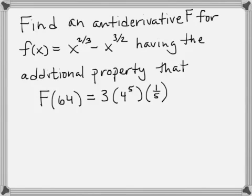In this problem we want to find an antiderivative F for f(x) = x^(2/3) - x^(3/2) having the additional property that F(64) = 3(4^5)(1/5).